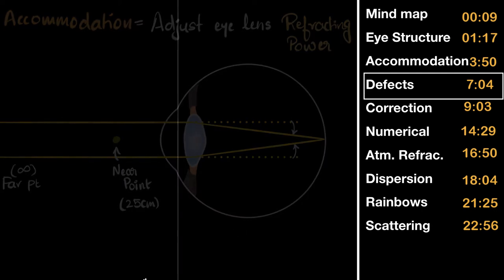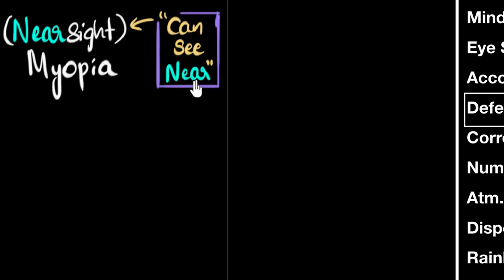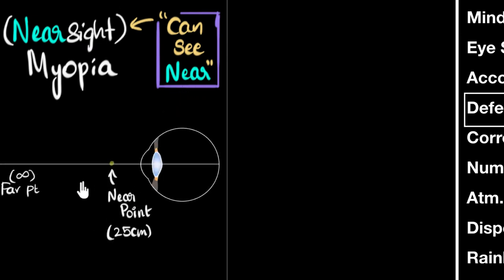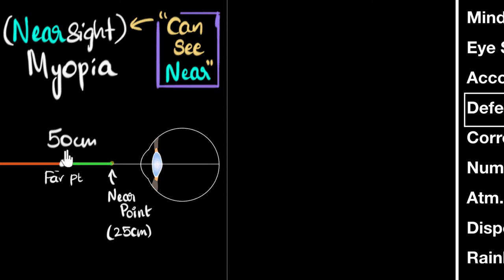There are three major defects to study. The first is called myopia, or nearsightedness, meaning the person can see things which are near. For example, if a person can see things closer than 50 centimeters but cannot see anything clearly farther than 50 centimeters, that person is myopic. This means for a myopic person, the far point is not infinity — the far point gets shifted closer, to 50 centimeters in this example.